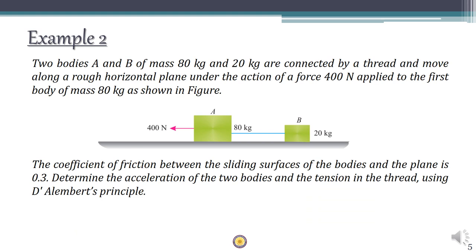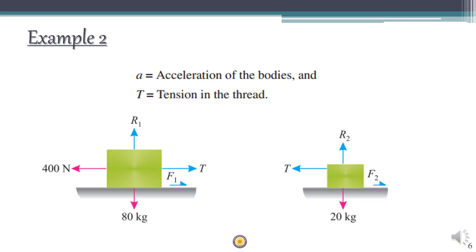Now let's see another example: a connected body problem. We have two bodies A and B of masses 80 kg and 20 kg respectively. A force of 400 N pulls toward the left side. Bodies A and B are connected by a thread which will have some tension T. The coefficient of friction between the sliding surface is 0.3. We need to find the tension in the thread and the acceleration using D'Alembert's principle.